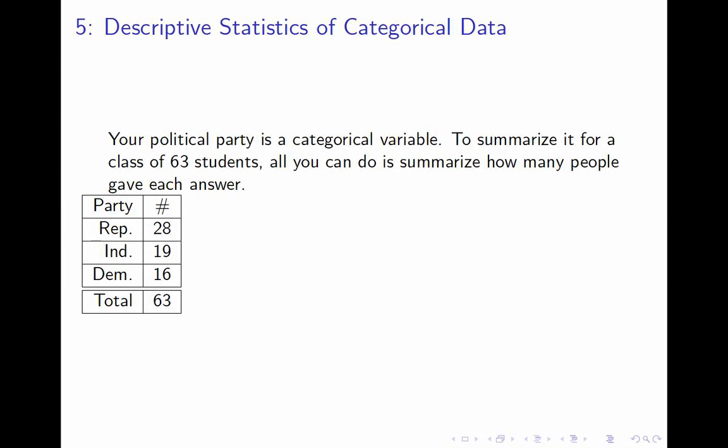And here you can see I have a sample of 63 students. In fact, this is a sample I surveyed Math 217 a couple of years ago. This is actual data. And I think it makes sense that instead of listing 63 times the words Republican, Independent, or Democrat, a more sensible way to summarize the data is to just say how many of the 63 students answered each of the three questions. So I have 28 Republicans, 19 Independents, and 16 Democrats.